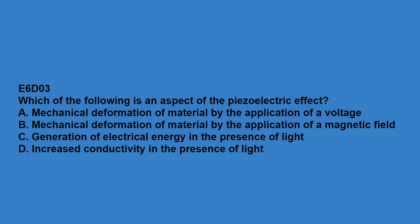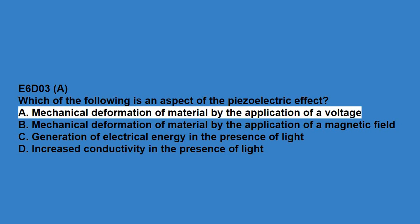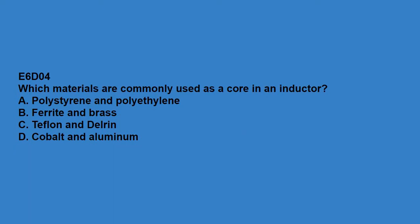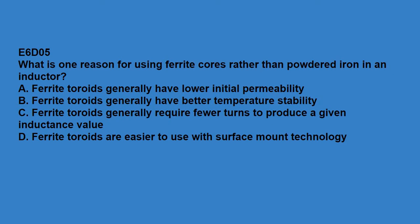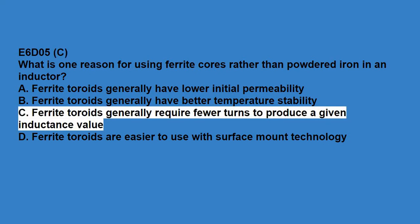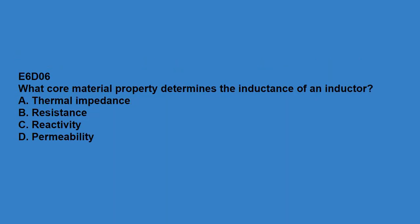E6D03: which of the following is an aspect of the piezoelectric effect? Mechanical deformation of material by the application of a voltage. E6D04: what materials are commonly used as a core in an inductor? Ferrite and brass. E6D05: which is one reason for using ferrite cores rather than powdered iron in an inductor? Ferrite toroids generally require fewer turns to produce a given inductance value. E6D06: what core material property determines the inductance of an inductor? Permeability.